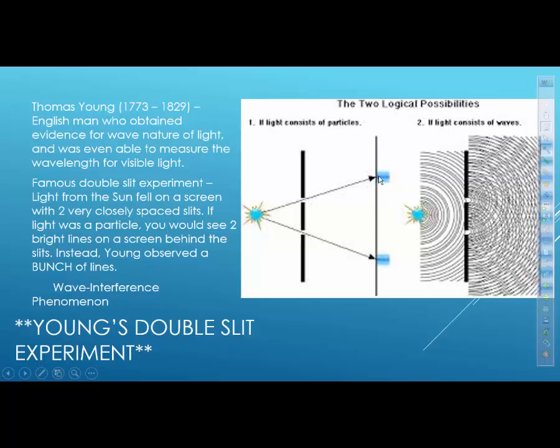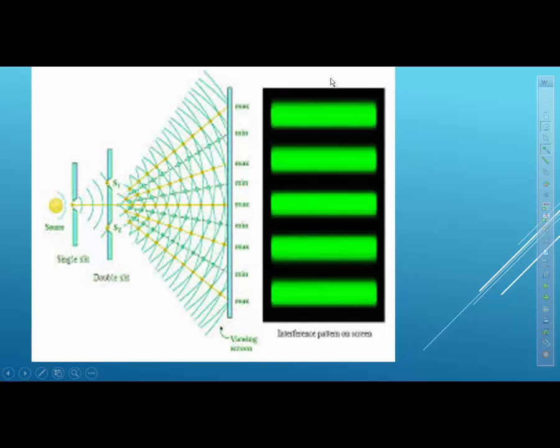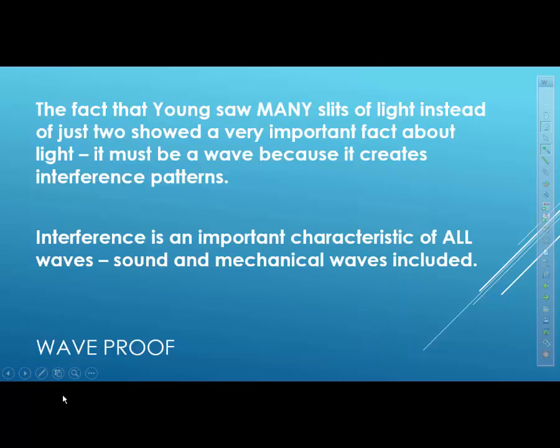So instead of seeing just two single solitary dots of light, what Young observed was a whole bunch of different lines on the screen behind the slits. Super important for physics. So what he discovered, the light passes through this double slit right here, and then it spreads out through diffraction. That's what diffraction is, the spreading out of the light waves as it passes through an opening. And so it spreads out and it hits the screen behind it. What's going on is that Young observed these patterns of really bright strips and really dark strips alternating all along the screen. And this pattern comes from wave interference.